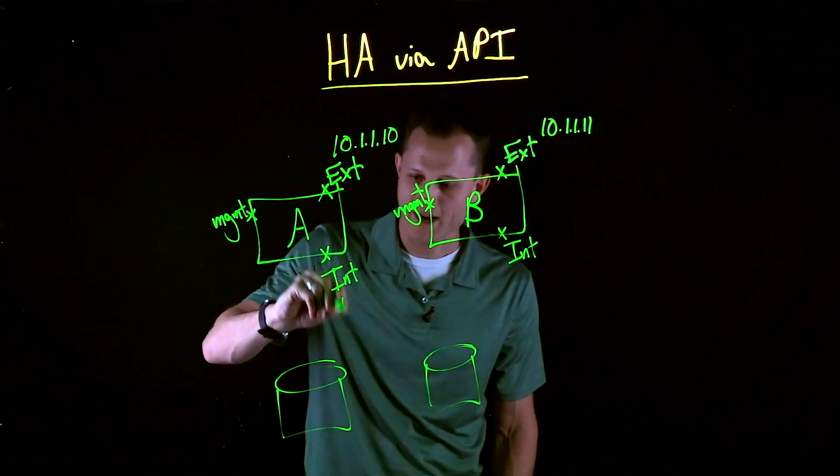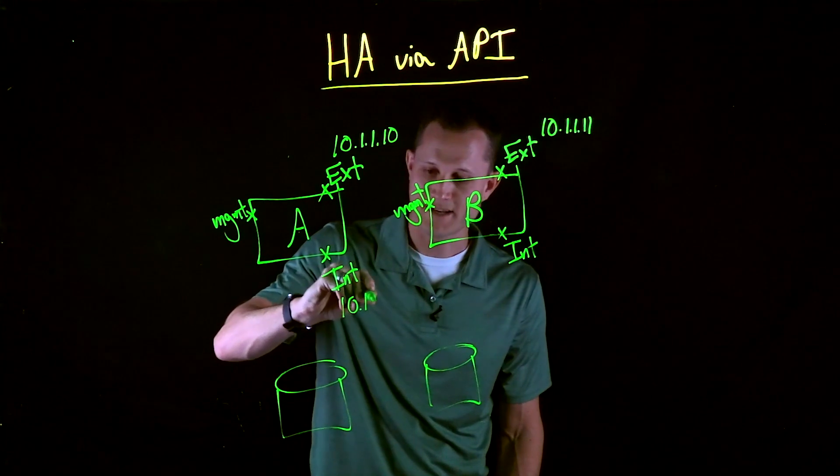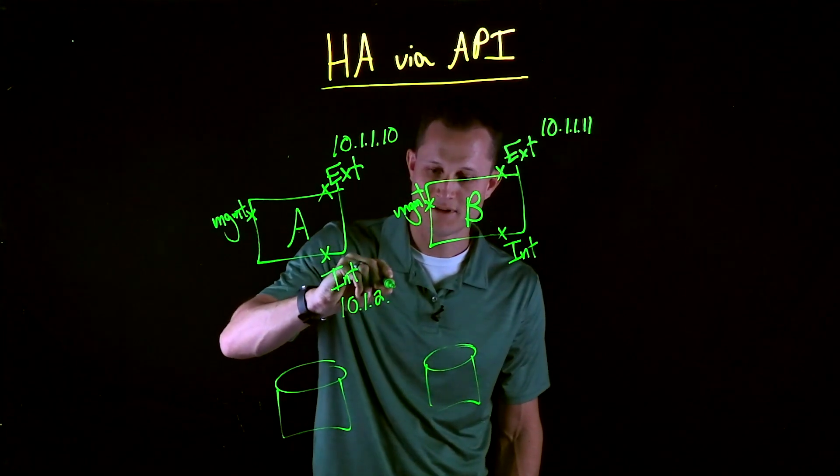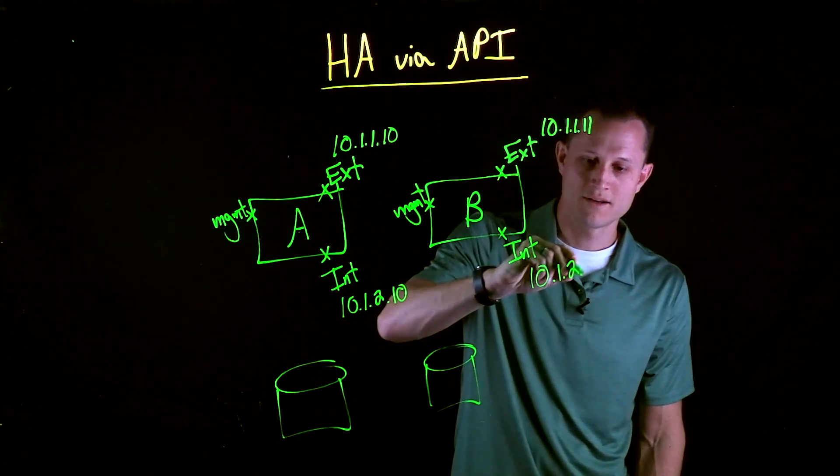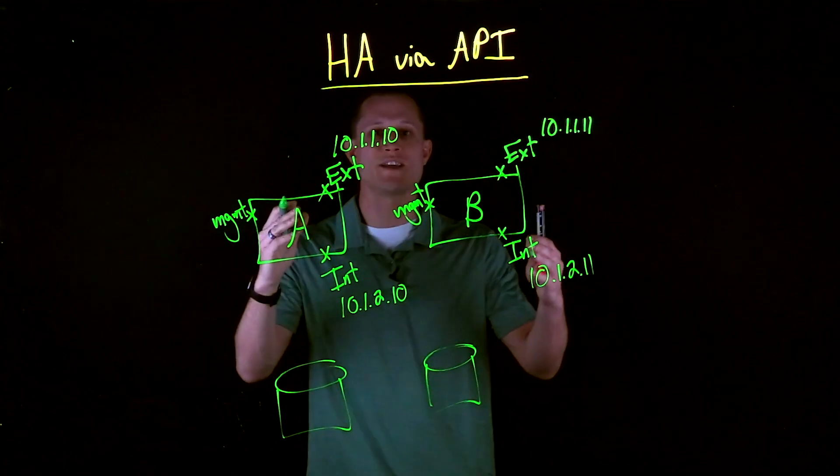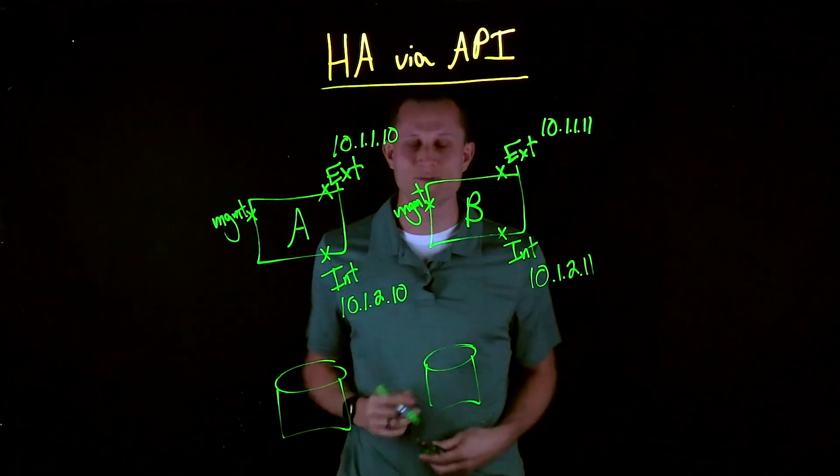We've got to do the same for the back-end. Let's call this subnet 10.1.2. We'll do .10, .11. Our IPs are now allowing connectivity with our F5.